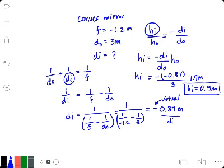The fact that it's a positive number means that it is pointing upright, which again makes sense because this is a virtual image.